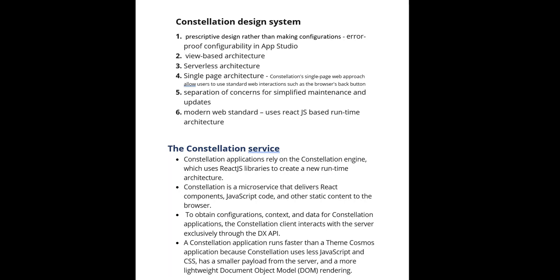It also has separation of concerns and uses modern technologies. If you look at UIKit, it uses old obsolete JSP tags which are nowhere used now. But the latest Constellation, the Cosmos React system, uses modern web standards — it uses a ReactJS-based runtime architecture. Constellation applications rely on the Constellation engine, which uses ReactJS libraries to create a new runtime architecture. Constellation is nothing but a microservice that delivers React components and JavaScript code to the browser using DxAPI to obtain configurations, context, and data.